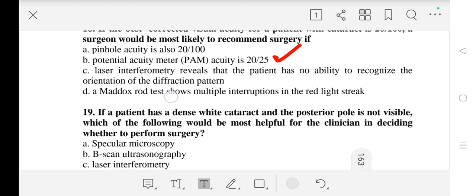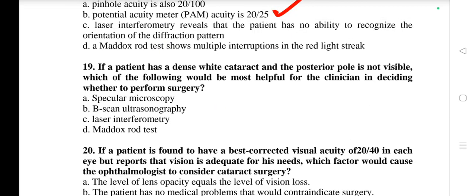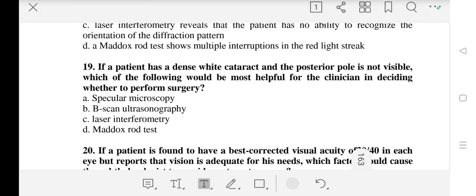Question number 19: If a patient has a dense white cataract and the posterior pole is not visible, which of the following would be most helpful for the clinician in deciding whether to perform surgery? Our correct answer is B - B-scan ultrasonography.